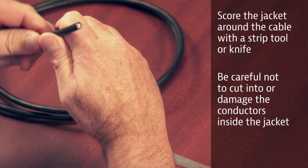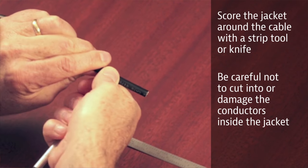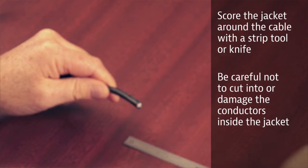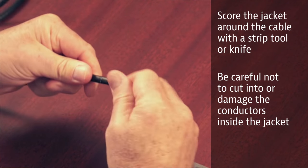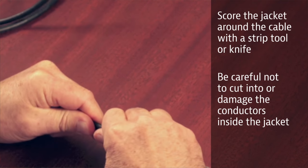You can use a strip tool like the cigar cutter or you can use a hobby knife like the Xacto knife. You can use a box knife, but you want to score the jacket around the cable. Do it carefully - you don't want to go too deep or cut your conductors. If you flex the jacket, you'll see the jacket breaks apart and you can pull this off.